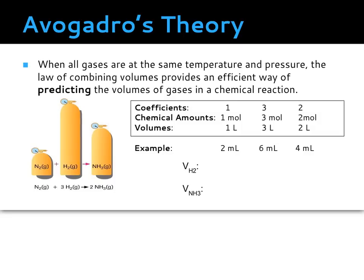When we look at Avogadro's theory and the law of combining volumes together, consider the reaction in the box at the left: we are taking nitrogen gas and hydrogen gas and making ammonia. From this balanced chemical equation, the coefficient of nitrogen is one, hydrogen gas is three, and ammonia is two. Based on Avogadro's theory, we have one mole of nitrogen, three moles of hydrogen, and two moles of ammonia. Based on the law of combining volumes, we would need one liter of nitrogen for three liters of hydrogen for two liters of ammonia.